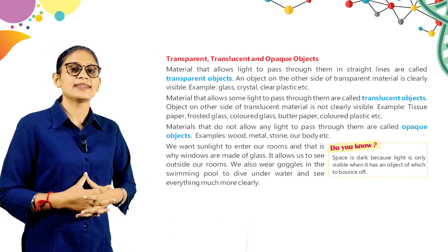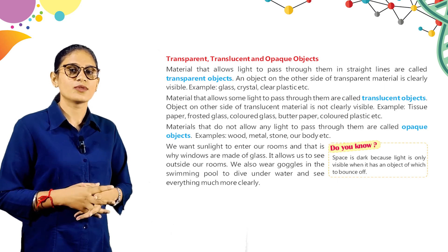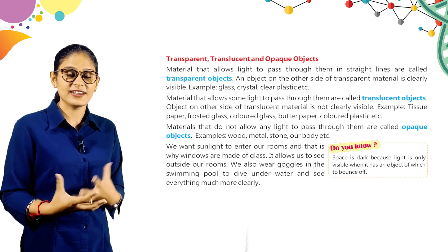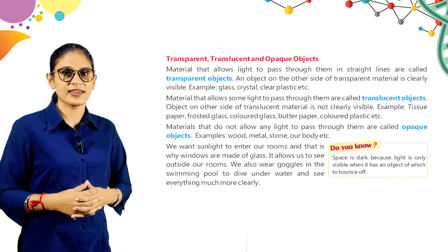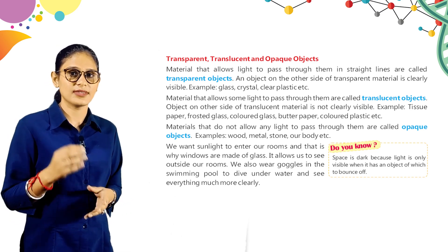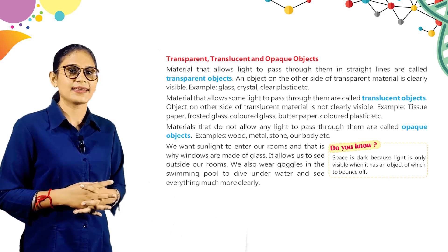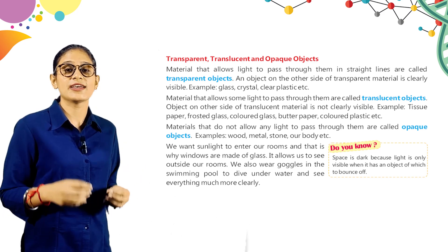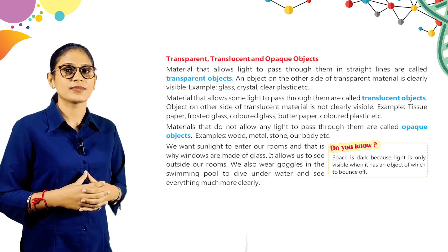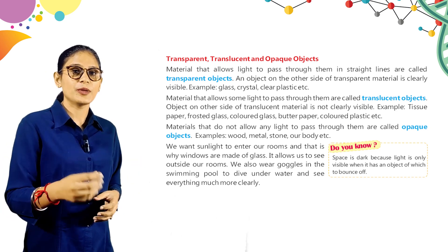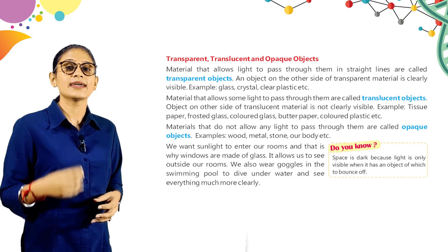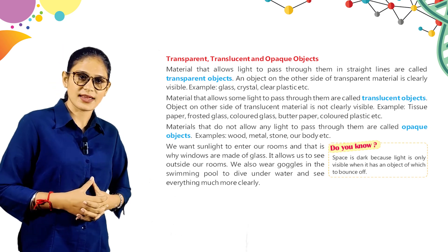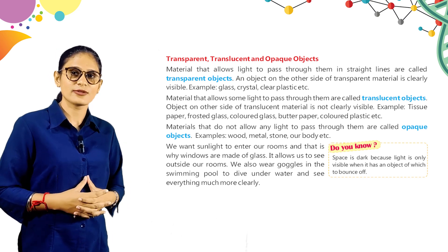Materials that allow some light to pass through them are called translucent objects. Objects on the other side of translucent material are not clearly visible. Examples: tissue paper, frosted glass, colored glass, butter paper, colored plastic, etc.